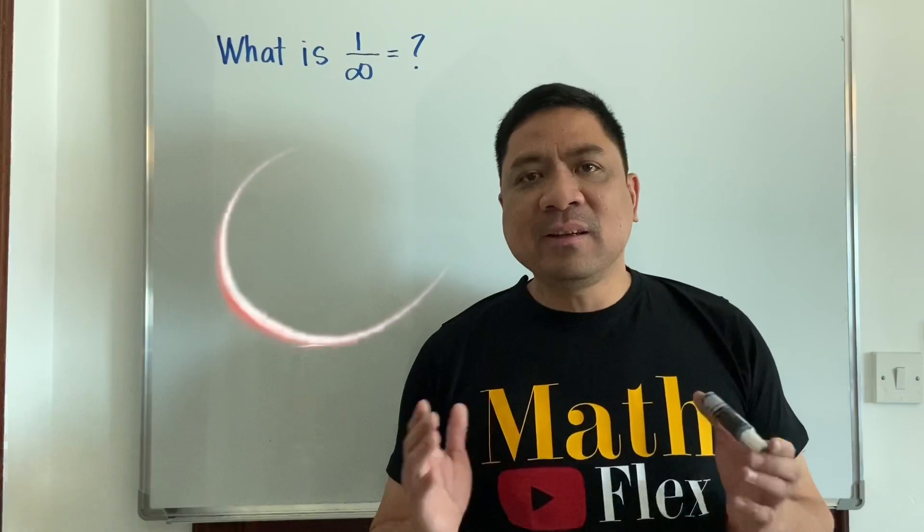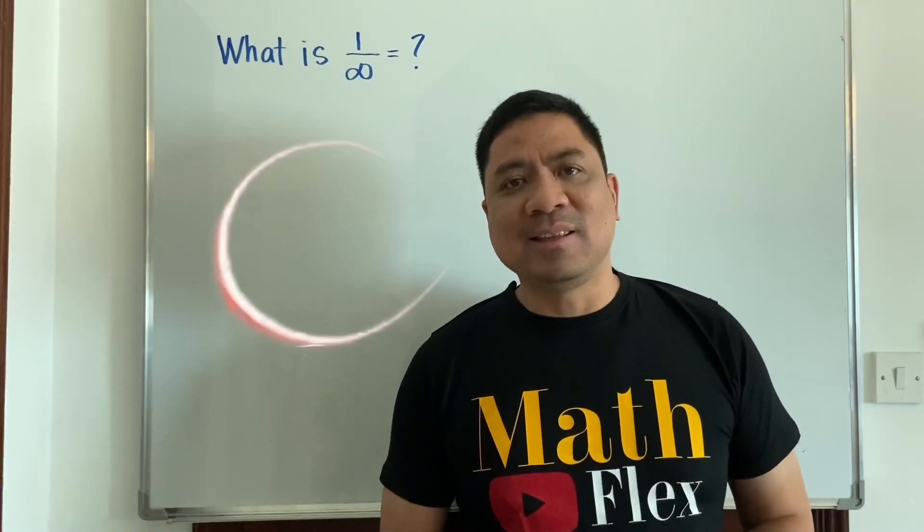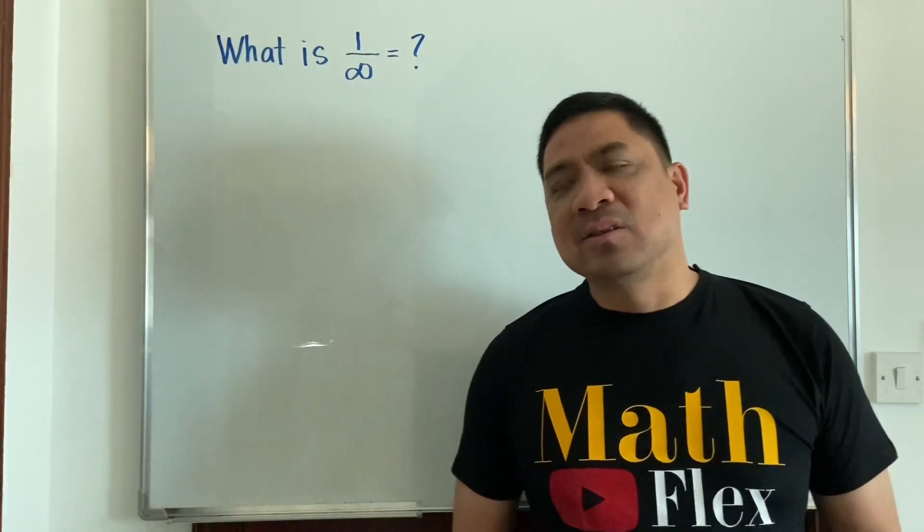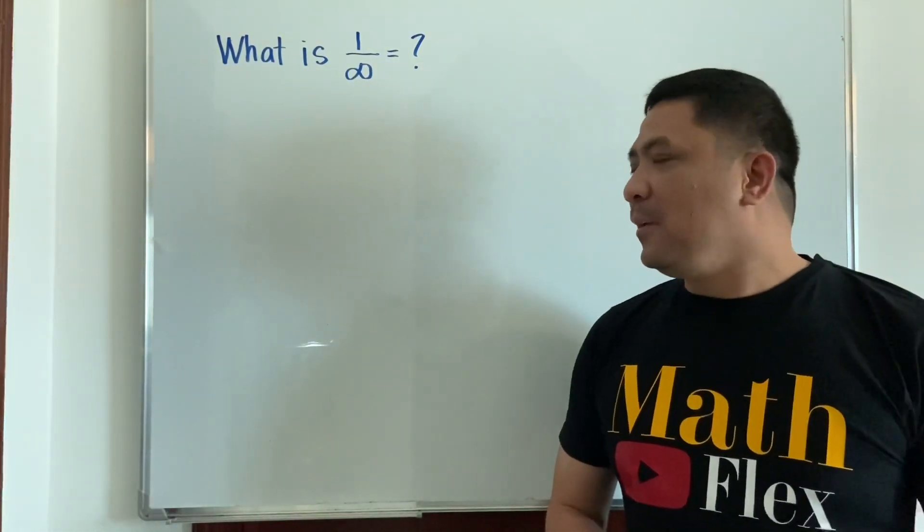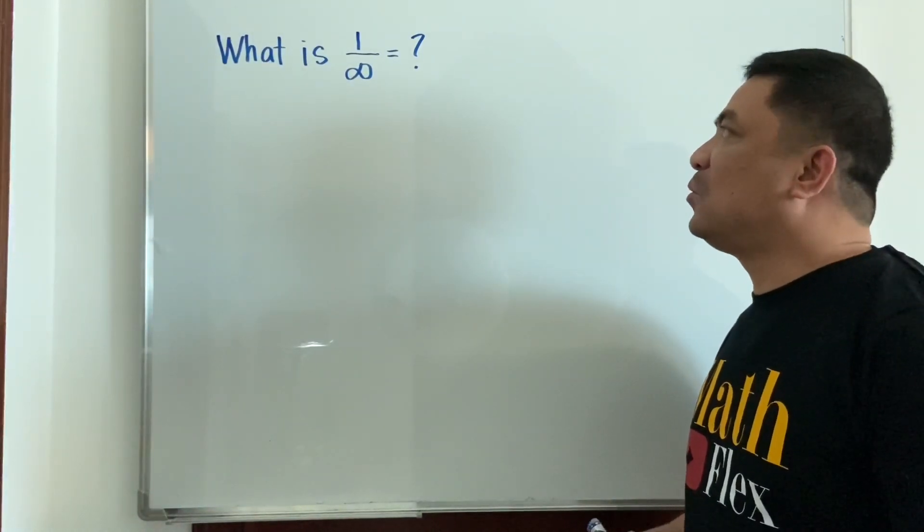My definition of infinity is that number greater than the largest number you can think of. So that is infinity. Just imagine how large the number is. Let's try to answer this question: 1 over infinity.